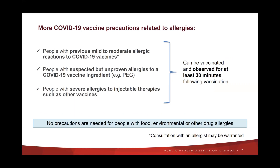Some allergies warrant a longer observation time. People with suspected but unproven allergies to a COVID-19 vaccine ingredient, such as those mentioned in the previous slide, and people with severe allergies to injectable therapies, such as other vaccines, should be monitored for at least 30 minutes following vaccination. As should people with previous mild to moderate allergic reactions to COVID-19 vaccines. For those individuals, consultation with an allergist may be beneficial. No precautions are needed for people with food, environmental, or other drug allergies. For people with a strong history of severe allergies who may be at higher risk for severe reactions, consider proximity to emergency services when determining their vaccination site.